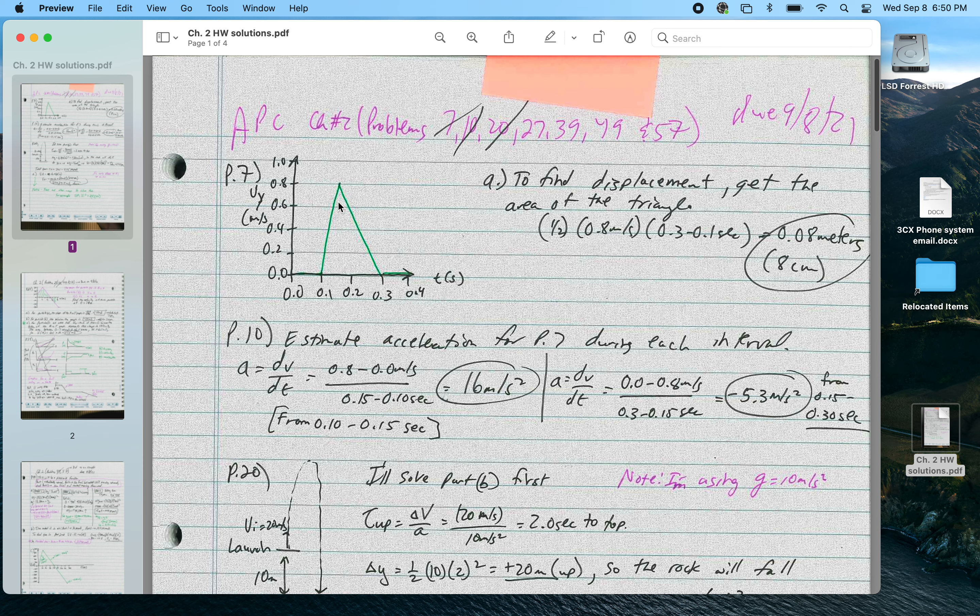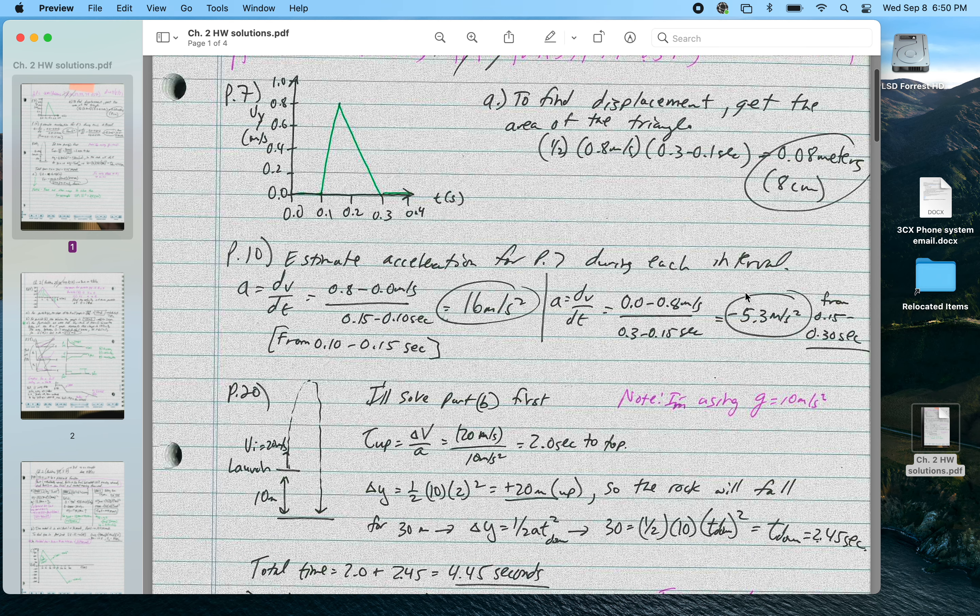For problem number 7, problem 7 and 10 go together. To find the displacement of this triangle, we end up basically looking at the area of the triangle. So to find the displacement of this object, it's one half base times height. The base is this interval, the height is the maximum height, and I get 0.08 meters or 8 centimeters.